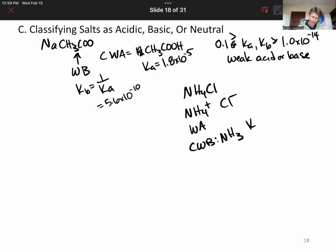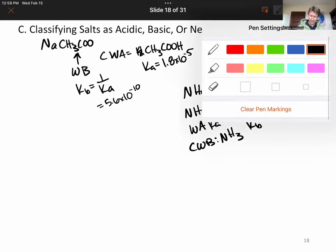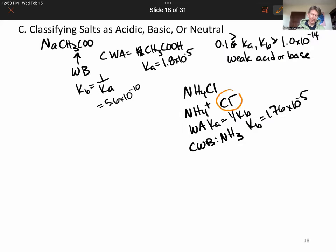I think Kb equals 1.76 times 10 to the minus 5th if I remember correctly, and then Ka here is going to equal 1 over Kb in this case. That's all well and good. Now let's talk about the Cl minus ion.